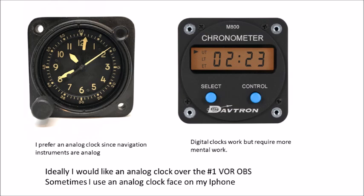Similarly, I prefer an analog motion like the movement of the sweep second hand. If I could create the ideal clock training aid, I would find an analog sweep second hand clock about the size of an OBS and affix it to the primary OBS in the cockpit, usually the number one VOR. I've also used my iPhone — I have an app with a nice analog clock face and sometimes I hold that in front of the VOR OBS.